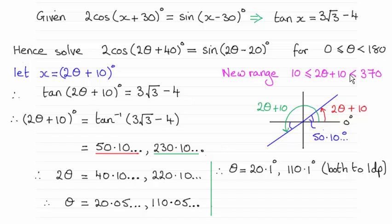So you can see the answers. θ turns out to be 20.1 degrees and 110.1 degrees. We had to give both to one decimal place. So how do we do this? Well I'll just take you through it.